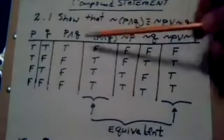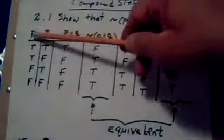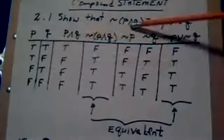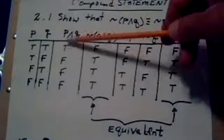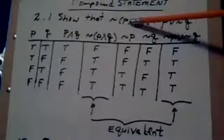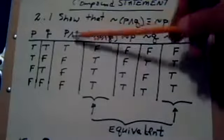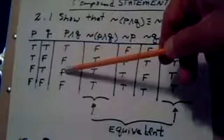On the left, you input p and q and go from the inside out to the conjunction. This is the result of the conjunction. To negate it, you go to the end and just take the opposite of each.